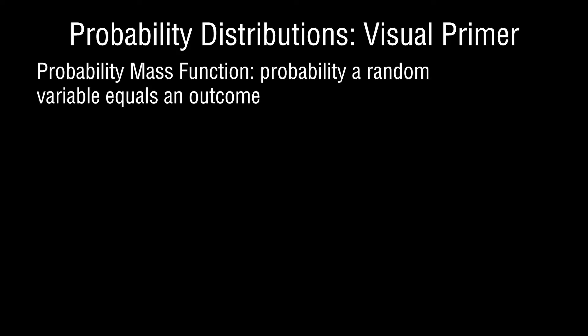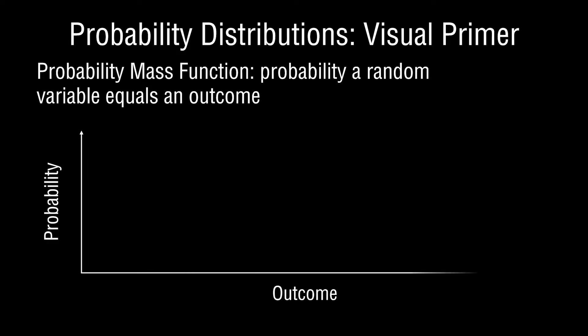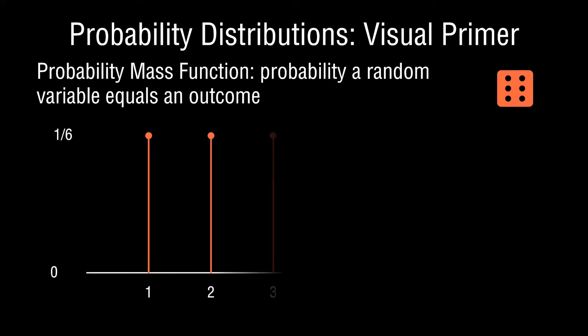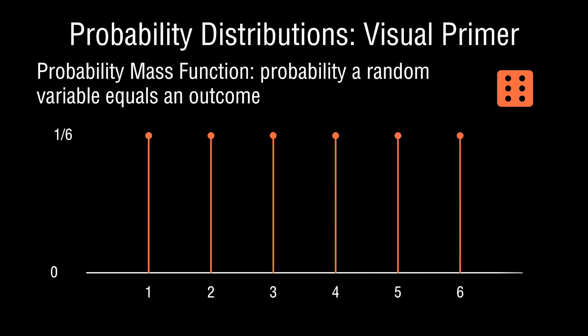The probability mass function has on the x-axis the different outcomes the random variable might take on, and on the y-axis the different probabilities associated with those outcomes. In the example of rolling a die, there are six outcomes the random variable can take on, and we usually weight each one with a probability of one over six.